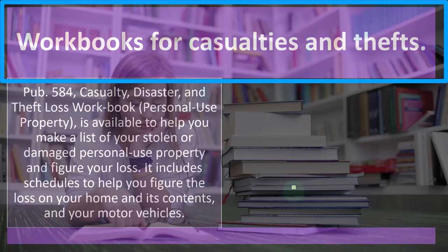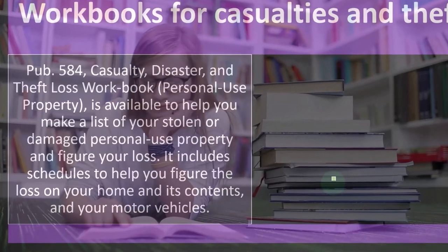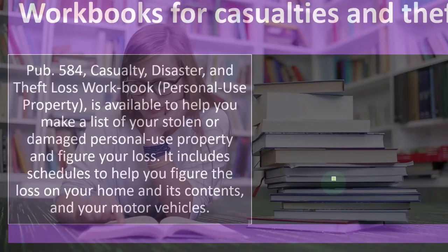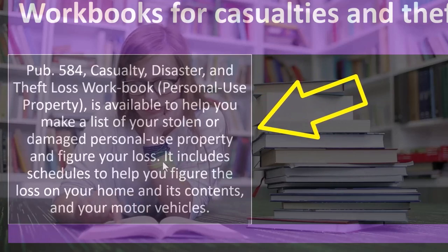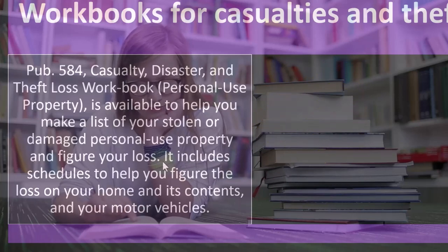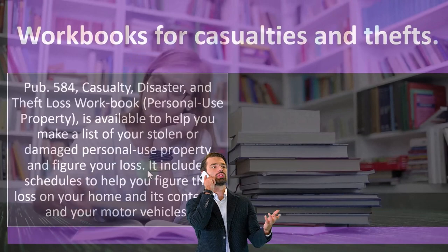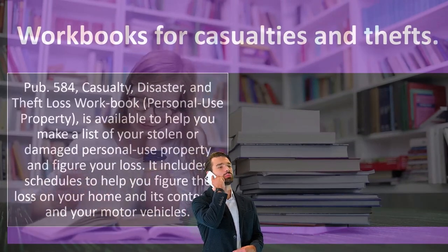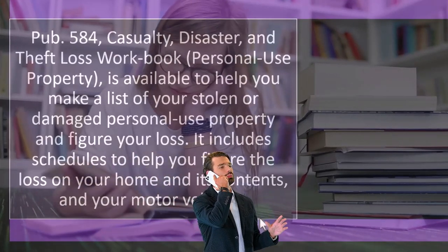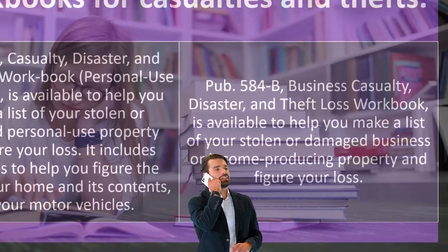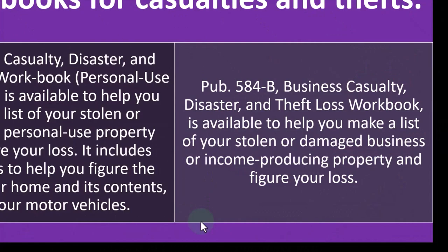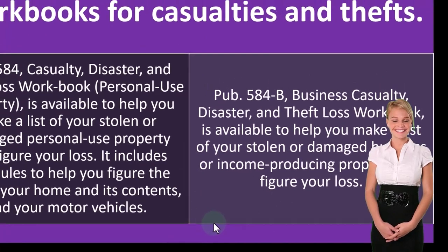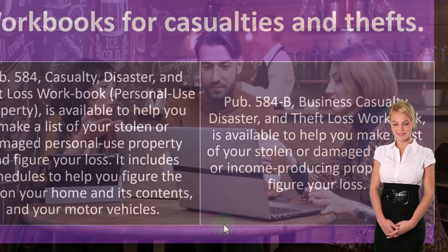Workbooks for casualties and thefts: Publication 584, Casualty, Disaster, Theft Loss Workbook — Personal Property — is available to help you make a list of your stolen or damaged personal property and figure your loss. It includes schedules to help you figure the loss on your home, its contents, and your motor vehicles. Publication 584B, Business Casualty, Disaster, and Theft Loss Workbook, is available to help you make a list of your stolen or damaged business or income-producing property and figure your loss.